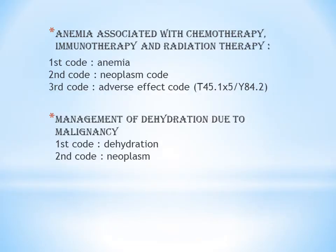The next guideline of neoplasm is anemia associated with chemotherapy, immunotherapy, and radiation therapy. In the previous video I discussed one guideline about anemia as a complication of neoplasm. But in this guideline, anemia is a complication of the treatment procedures of neoplasm — that is, anemia as a complication of chemotherapy, immunotherapy, and radiation therapy. As you all know, treatment procedures of neoplasm include chemotherapy, immunotherapy, radiation therapy, and surgery.